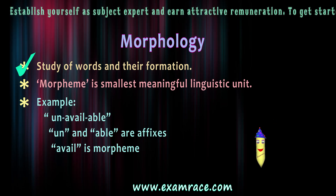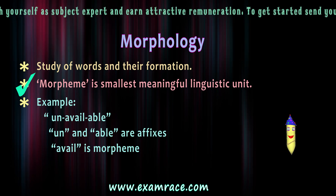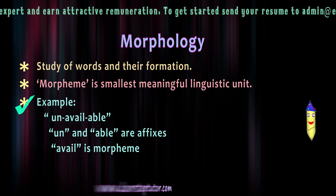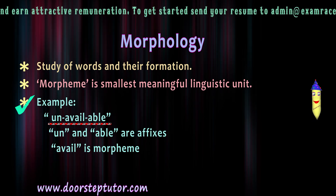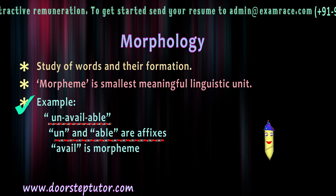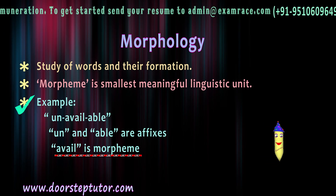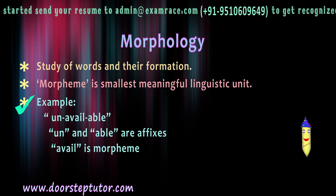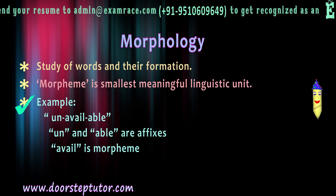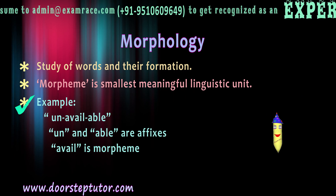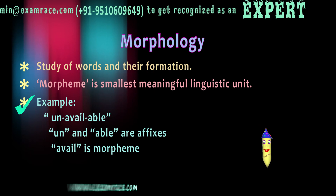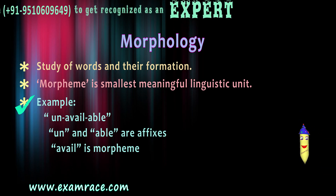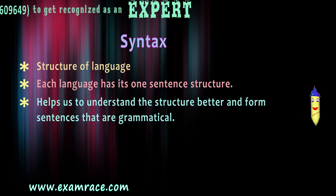Morphology is the study of words and their formation. The word morpheme refers to the smallest meaningful linguistic unit. For example, in the word 'unavailable,' if we remove the affixes 'un' and 'able,' we are left with 'avail.' Here, 'avail' is a morpheme which has a meaning, while the affixes do not have meaning in isolation — they depend on the root word 'avail' to derive meaning.